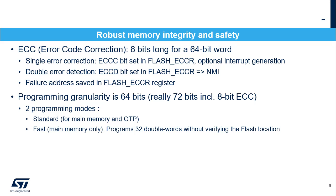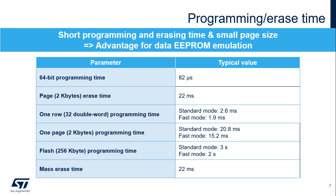The programming granularity is 64 bits — in fact 72 bits with the 8-bit ECC. There are two programming modes: standard mode for the main memory and OTP, and fast mode for the main memory only. In standard mode, the flash memory checks that the double word is erased before launching the programming. In fast mode, 32 double words are programmed without verifying the flash location. The flash memory programming time is only 82 microseconds for 64-bit double words.